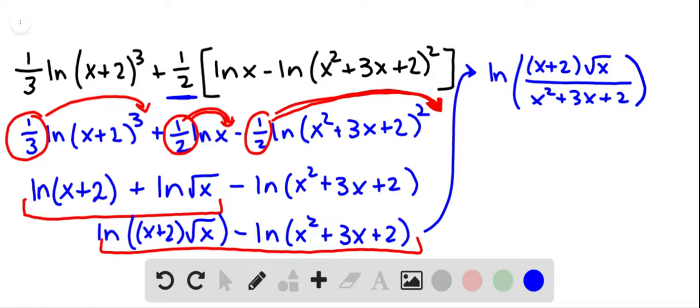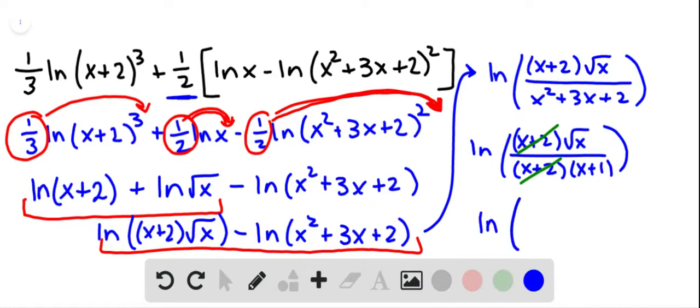Now you may have noticed that you actually can factor that denominator. You can factor x squared plus 3x plus 2. Let's do that. And it factors into x plus 2 times x plus 1. So let's go ahead and cancel the x plus 2s. So our final answer as a single logarithm is the natural log of the square root of x over x plus 1.